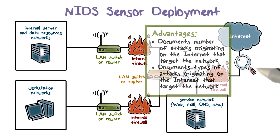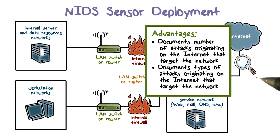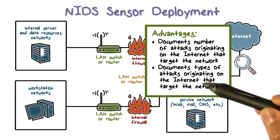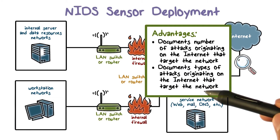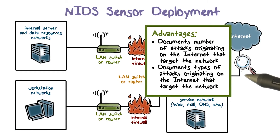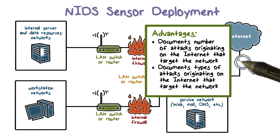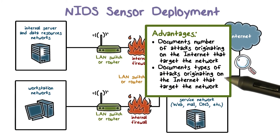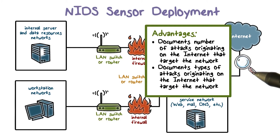A network IDS can also be placed between the external network and the internet. The main advantage of this location is that the network IDS can see all attempted attacks to the enterprise network, including those attacks that can be filtered by the firewalls. For example, if the firewall is overloaded, it will not only drop the incoming packet, it may not even have the resource to log this packet. But an IDS at this location can see that packet and log it.